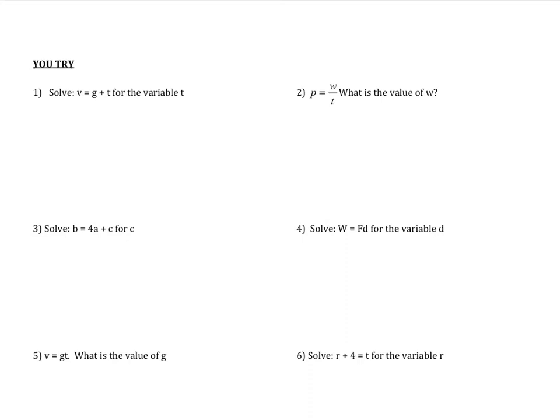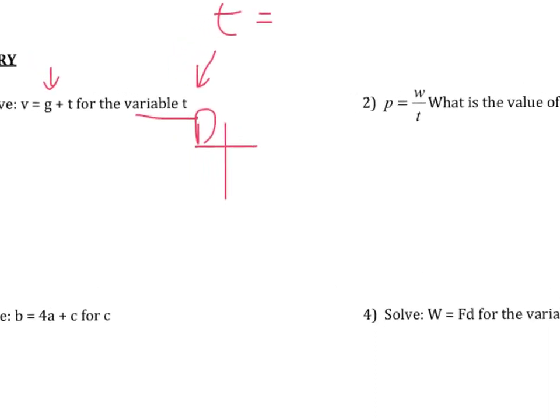I think we're just going to do one more because this one is a little bit different. So it says solve V equals G plus T for the variable T. This means that we need T all by itself. So our answer should be T equals something. Because we're solving for T, we ask, what is being done to T or what is being done? What's hanging out on the same side as T? If we look at the T, the T is on the right-hand side. So we're only going to focus on the right-hand side of the equal sign. And we see G plus T. Now what's hanging out over there? What all is on the same side of T? We have just a positive G hanging out.